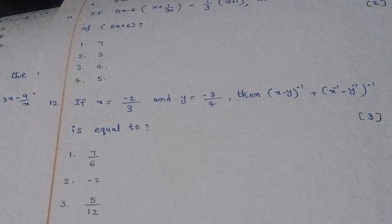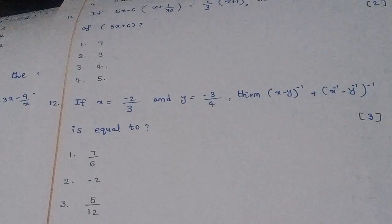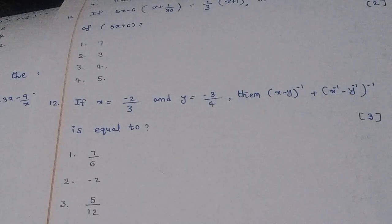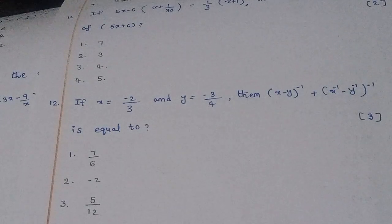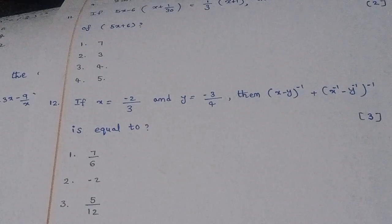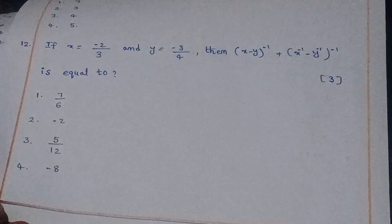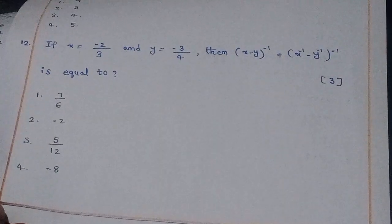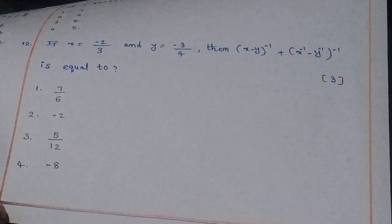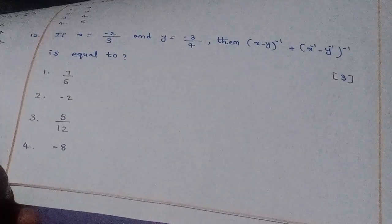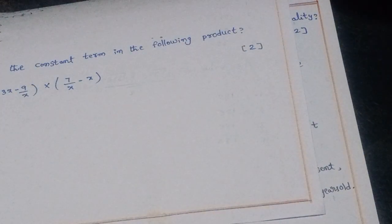Twelfth question: If x = −2/3 and y = −3/4, then (x − y)^(−1) + (x^(−1) − y^(−1))^(−1) is equal to what? The right answer is option 3: 5/12.